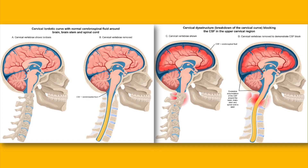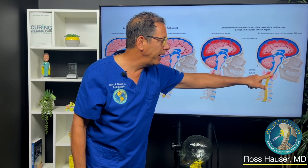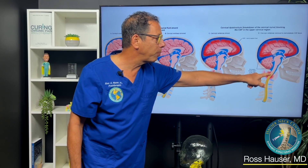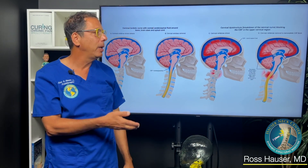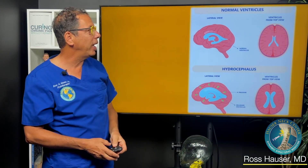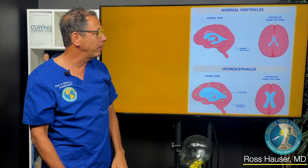Those blocks, just like a river — if you dam up the fluid flow in the river, it's going to be flooding all over. So basically, when the cerebral spinal fluid gets blocked, you're going to get fluid to accumulate in your brainstem and in the brain, and it can cause any sort of symptoms.